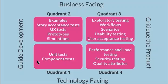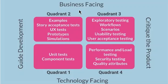Then quadrant two contains story acceptance tests, UX tests, and prototypes and simulations. So it is one step ahead of technology facing, moving toward business testing.